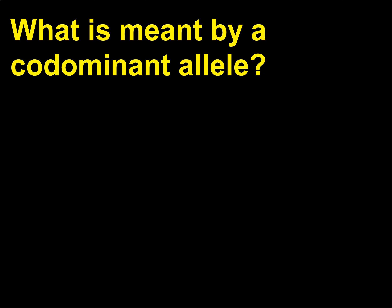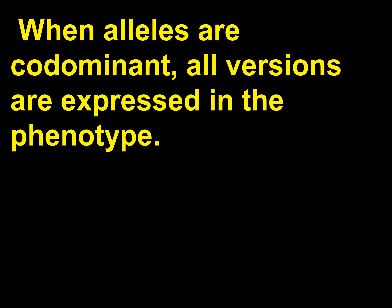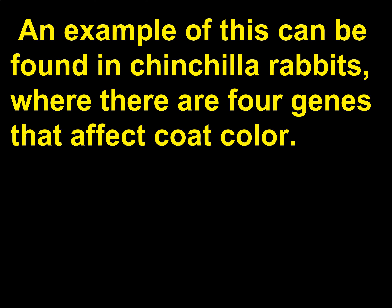What is meant by a codominant allele? Codominance is an example of non-Mendelian genetics. When alleles are codominant, all versions are expressed in the phenotype. An example of this can be found in chinchilla rabbits, where there are four genes that affect coat color.